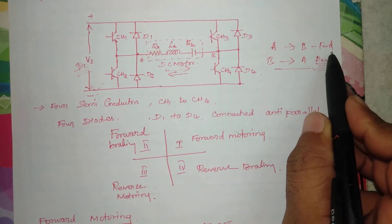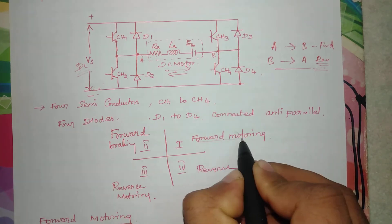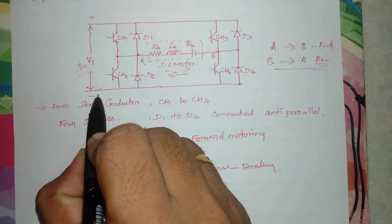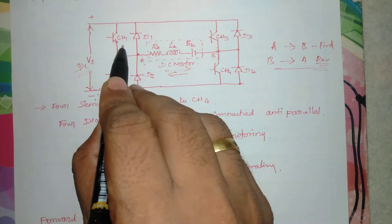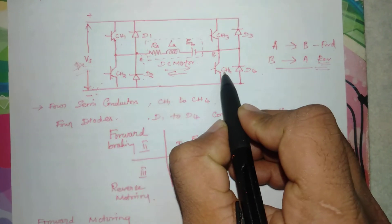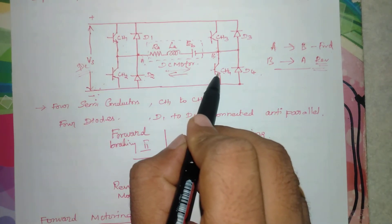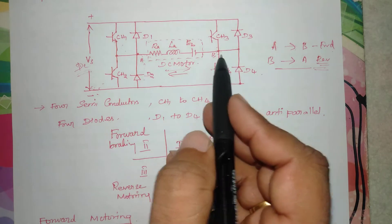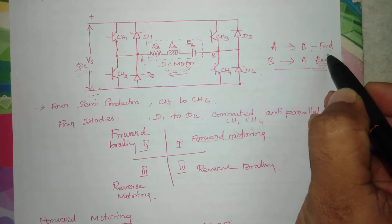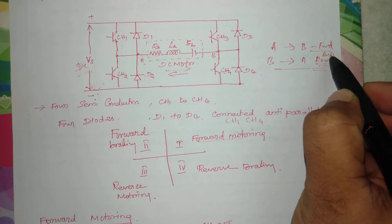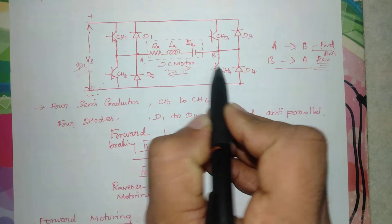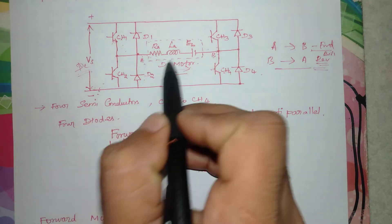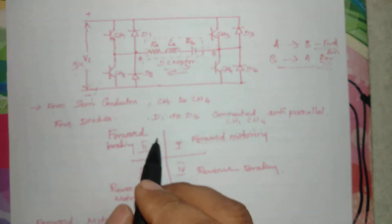For first quadrant (forward motoring): A must be connected to plus, so CH1 is turned on. For B to connect to minus, CH4 is turned on. So CH1 and CH4 are turned on for forward direction of rotation. After running at a particular speed, to initiate braking, CH1 is turned off, disconnecting the load from the source, and the forward braking phase begins.